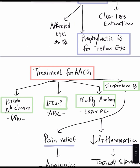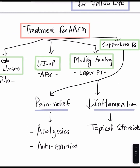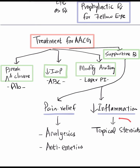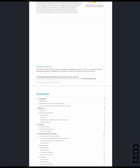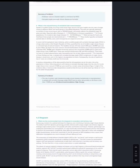Supportive treatment is crucial: patients with angle closure glaucoma have severe pain, so analgesics and anti-emetics are always given for nausea or vomiting. Some believe topical steroids also have a role in reducing inflammation, though be aware that topical steroids themselves can increase intraocular pressure. These clinical guidelines are provided by the Royal College of Ophthalmologists, with the PDF available in the description box for further reading.